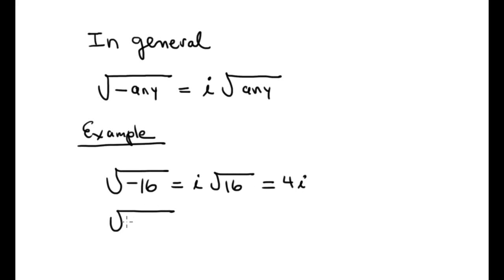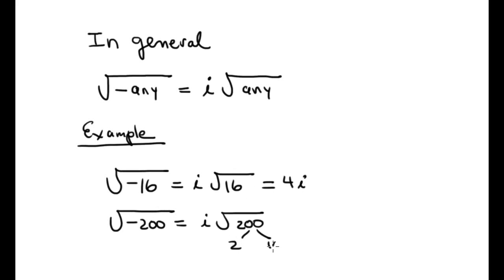Square root of negative 200 is i times the square root of positive 200. And 200 factors as 2 times 100, and 100 is a perfect square — square root of 100 is 10. So the answer is 10i, with radical 2 staying inside the radical.